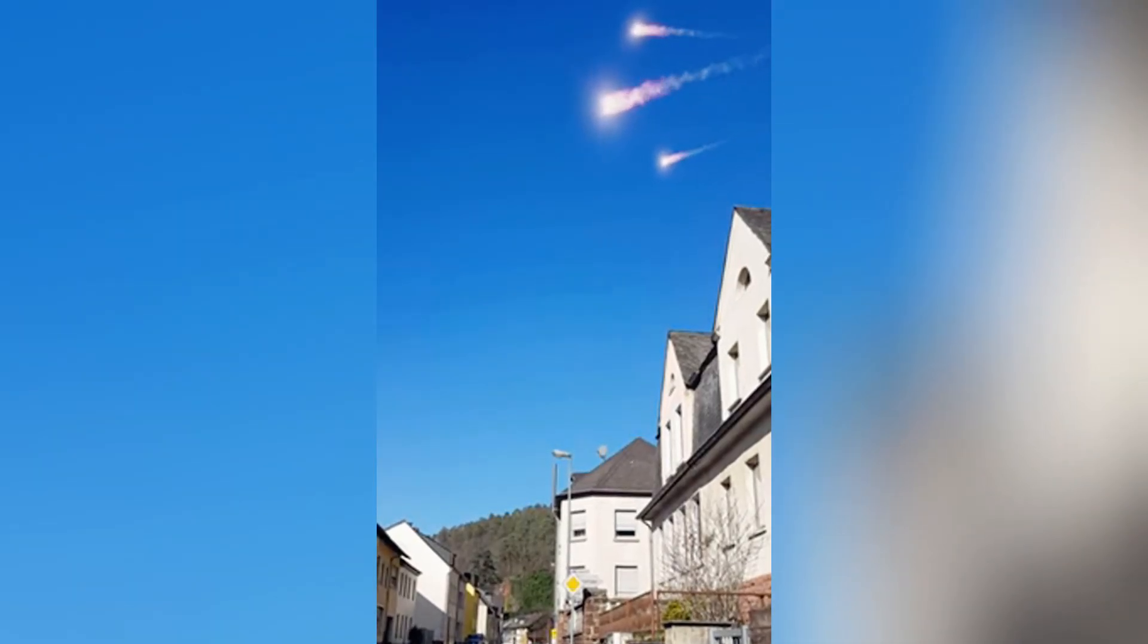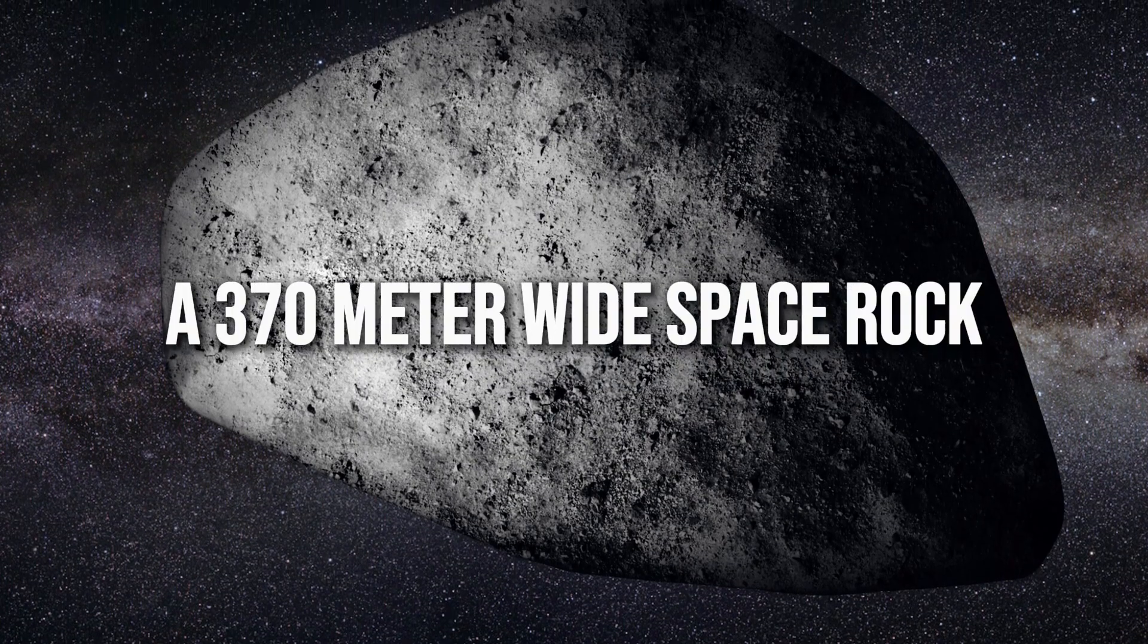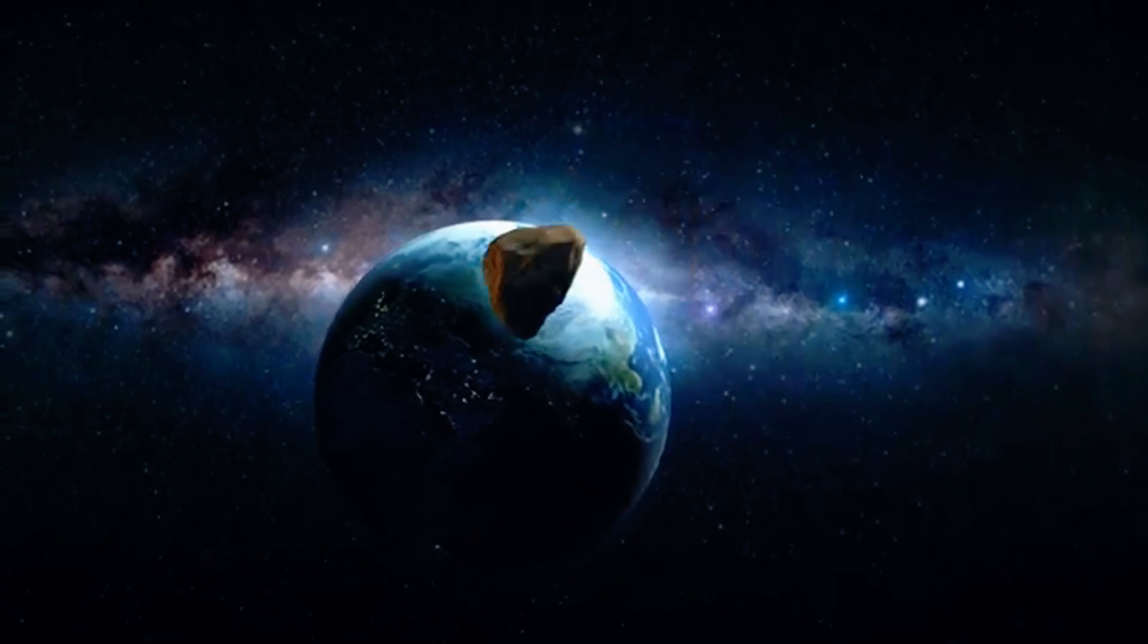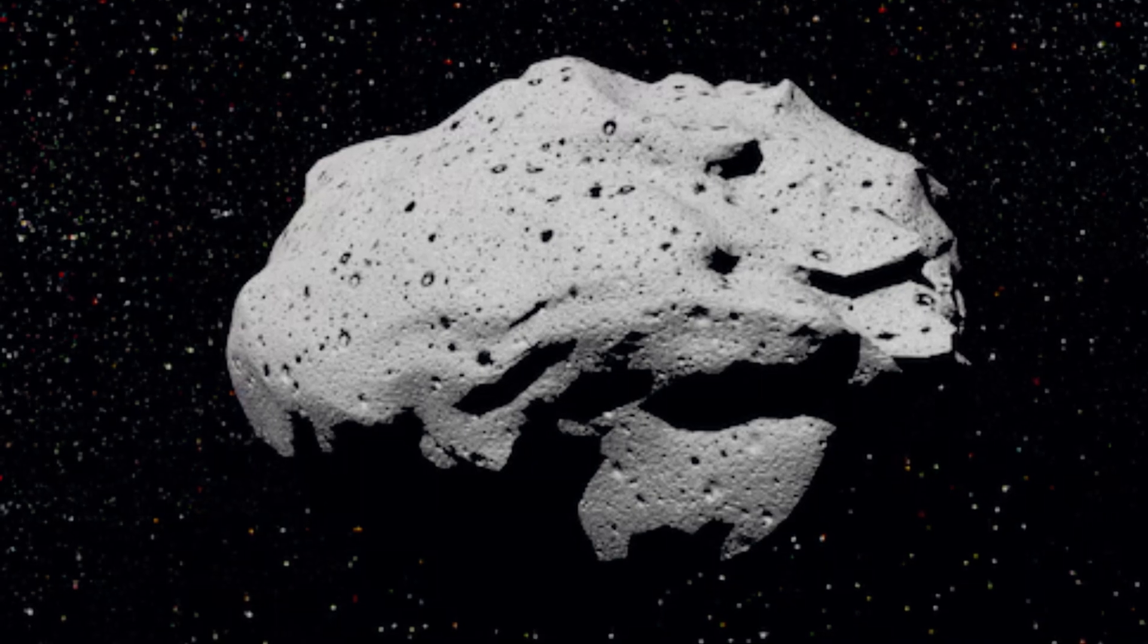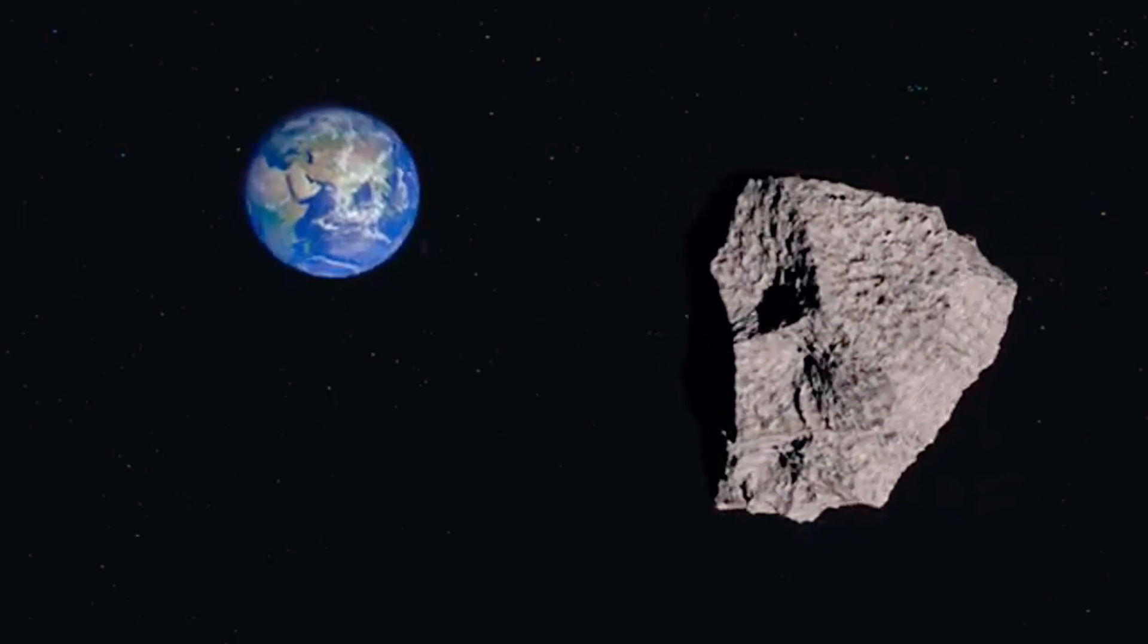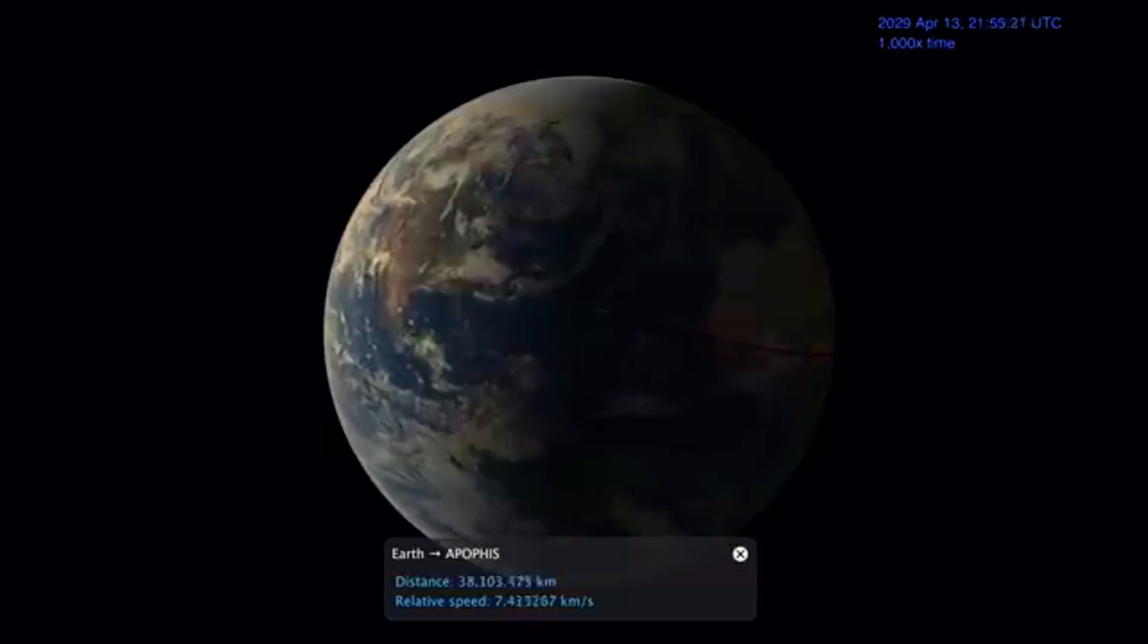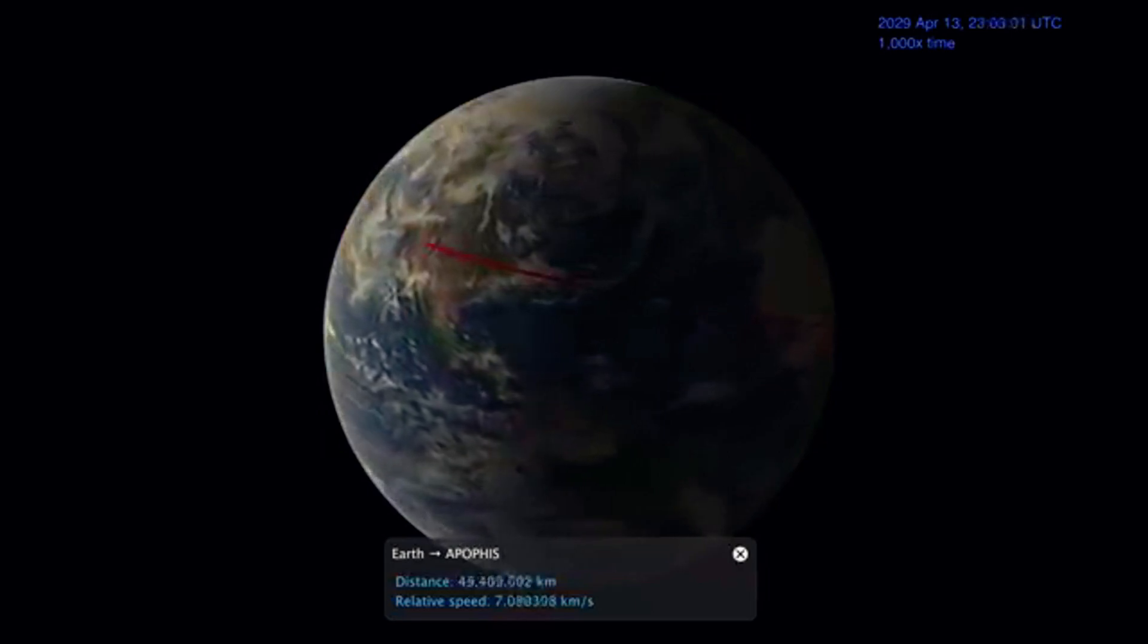In April 2029, an asteroid the size of a skyscraper will pass so close that we'll be able to see it with the naked eye. This is Apophis, a 370-meter-wide space rock that will zoom past Earth at just 31,000 kilometers, closer than some satellites. To put that into perspective, asteroid 2024 YR4 is only 50 to 100 meters wide and has a 1.2% chance of impact in 2032. But Apophis is over three times bigger and will pass Earth with zero room for error in 2029.